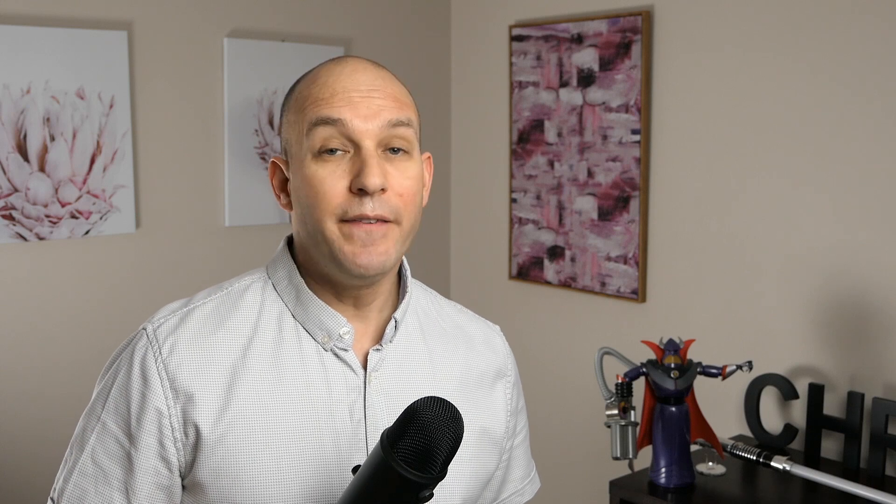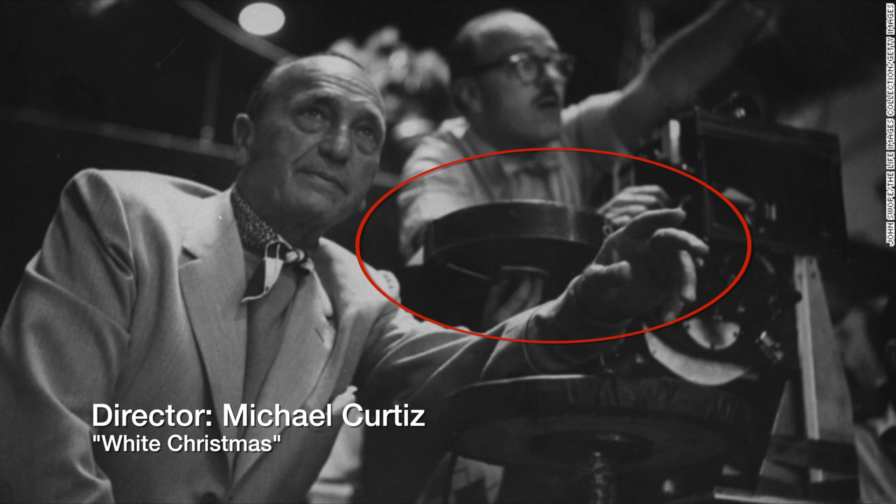Panavision's Vistavision and Technorama did something unique which can still be seen today with IMAX movies — they simply oriented the film on its side. With the film loaded sideways, you're not losing any picture to black bars at the top or bottom.